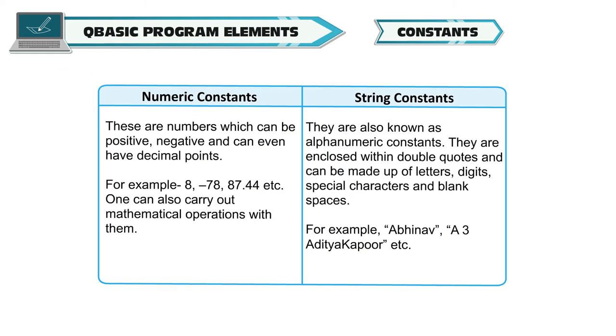Numeric constants: These are numbers which can be positive, negative and can even have decimal points. For example, 8, minus 78, 87.44, etc. One can also carry out mathematical operations with them. String constants: They are also known as alphanumeric constants.